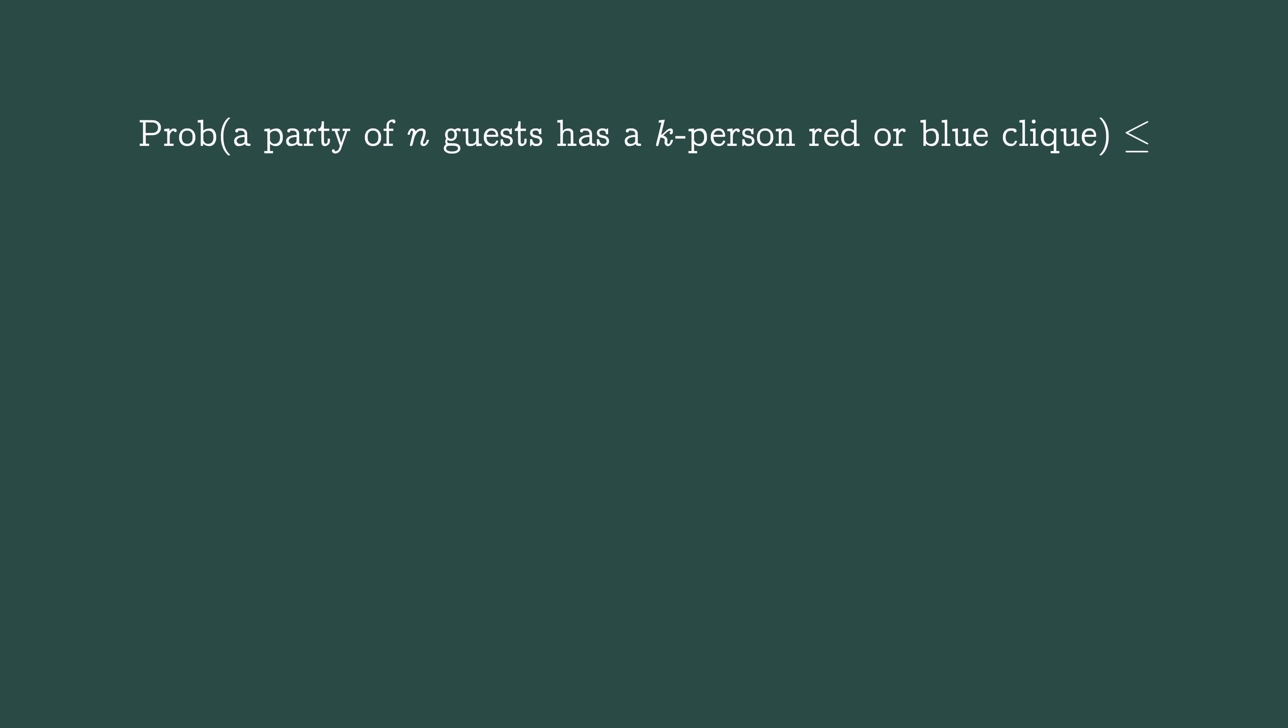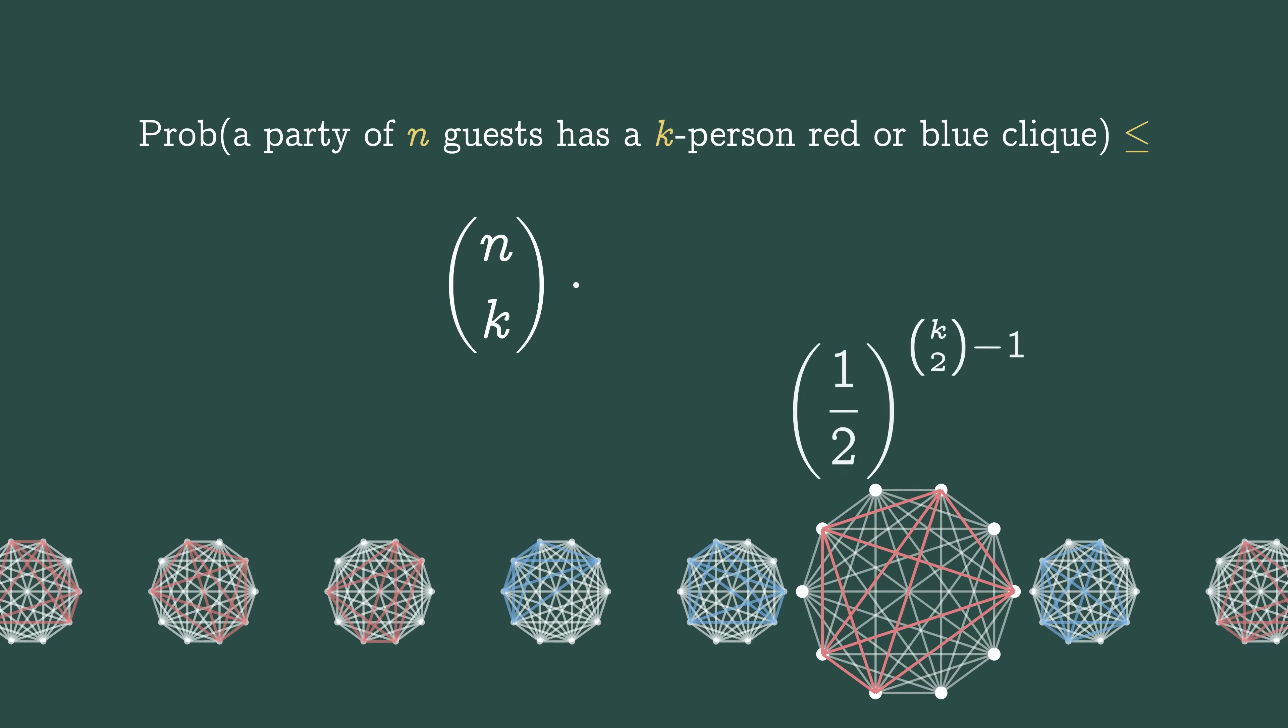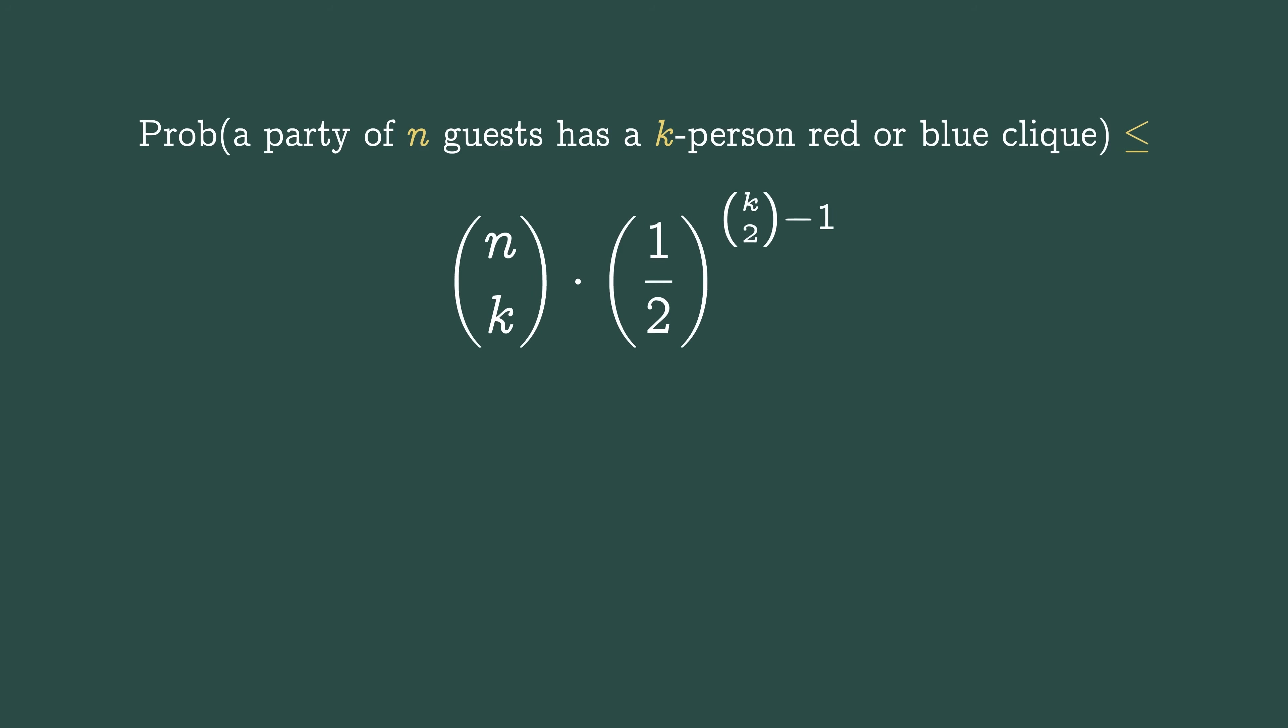The probability that a random party of n guests will have a k-person blue or red clique is less than or equal to the number of k-person groups, which is n choose k, times the probability that a particular group is all blue or all red, which is 1 half to the k choose 2 minus 1.